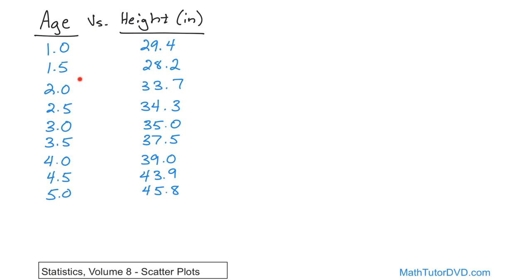It kind of makes sense that as the age of a child increases, the height of that child should also increase. We're not saying that one causes the other — we'll talk about causality later. At this point, we just want to see if there's any kind of relationship. The easiest way to do that is to plot this data in what we call a scatter plot.